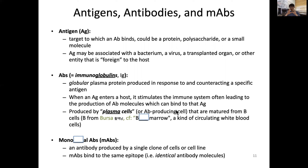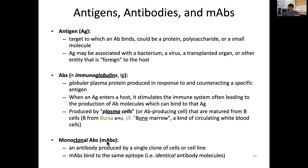Plasma cells are matured from B cells. The 'B' originates from 'bursa,' which was discovered in birds. B cells originate from bone marrow — a kind of circulating white blood cell. If an antibody is produced by a single clone of cells, the antibody will be completely identical — we call these monoclonal antibodies, or MABs. MABs bind to the same epitope because they are totally identical antibody molecules.